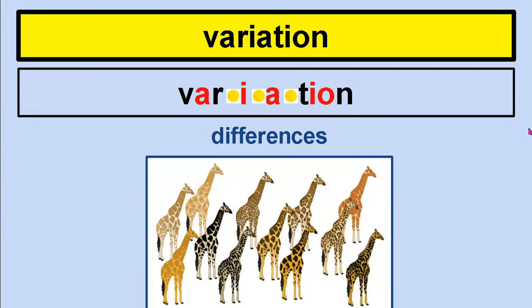Variation — differences. When we think of a giraffe, we often don't think of its variations, but the patches it has can be blurry or very sharp. They can be various colors and various sizes.